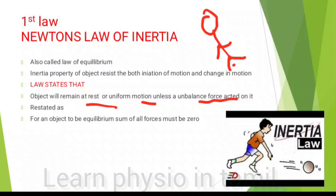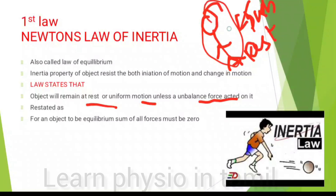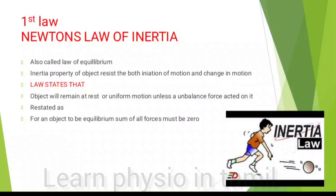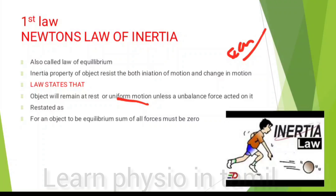Every object will remain at rest or in uniform motion unless an unbalanced force acts on it. An object in its normal state tends to stay in place on its own. When you act like a force — a push or pull — the object will remain and move against a single object. The rest is uniform motion at constant speed.